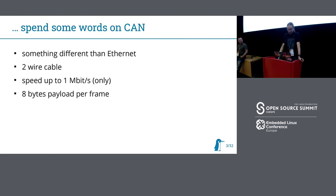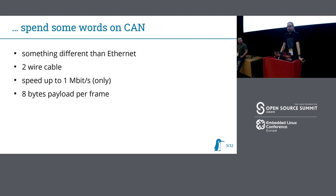I want to talk first about CAN, so that you're all on the same level. What's CAN about? CAN is a networking hardware and stack. You need just two wires for it. It's something different than Ethernet — much simpler. This is why we have different constraints. The speeds are just up to one megabit per second, and you only have eight bytes of payload per frame.